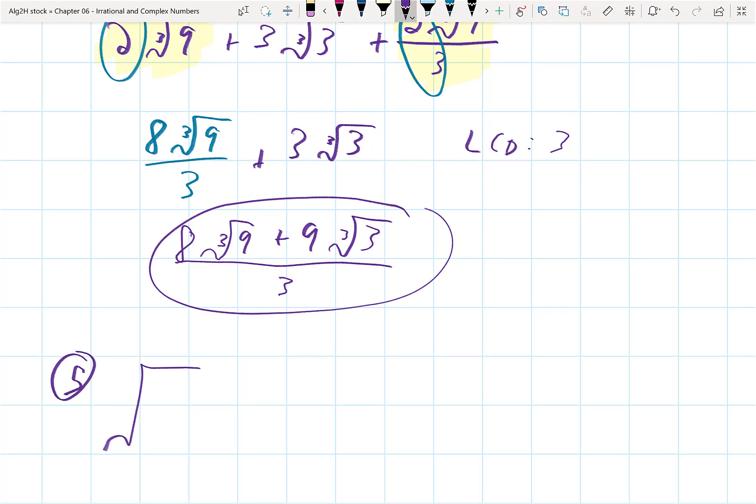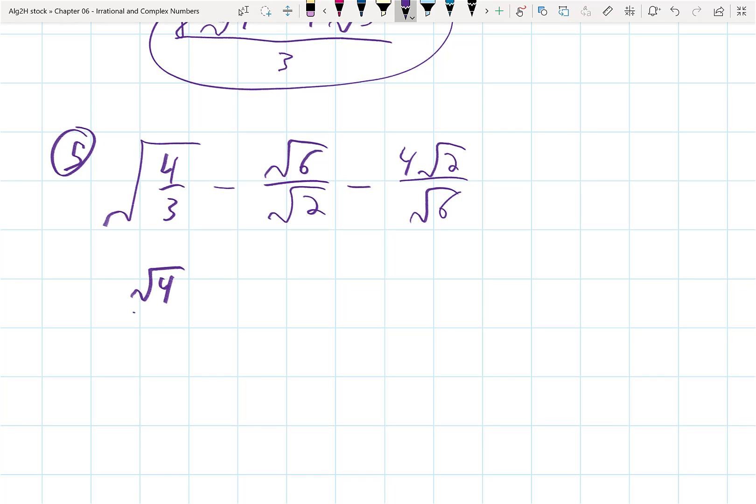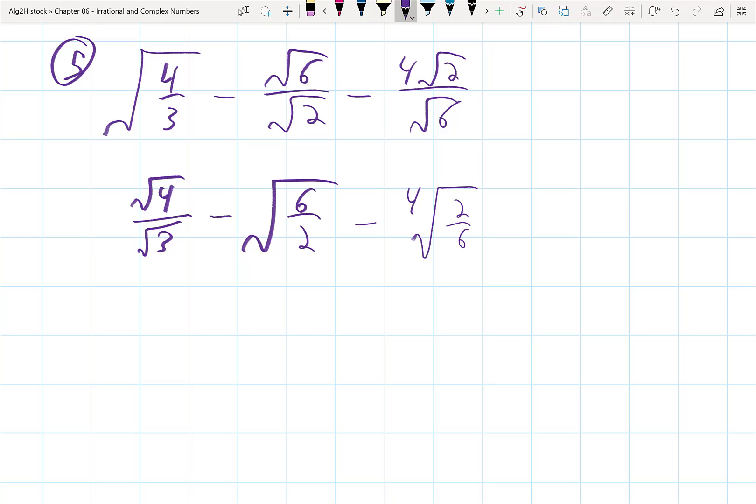Next one. Let's do one with some fractions underneath radicals. Radical 4 thirds minus radical 6 over radical 2 minus 4 over radical, or 4 radical 2 over radical 6. So, this is an example of where it may make more sense in some cases to split up the radicals, like the first fraction could become radical 4 over radical 3. But the second case, it might make sense to bring them together. Radical 6 over 2 minus 4, and then bring that together, radical 2 over 6 because splitting this first one up gives me 2 over root 3 minus, the second one is just root 3 minus, and this would be 4 over root 3.